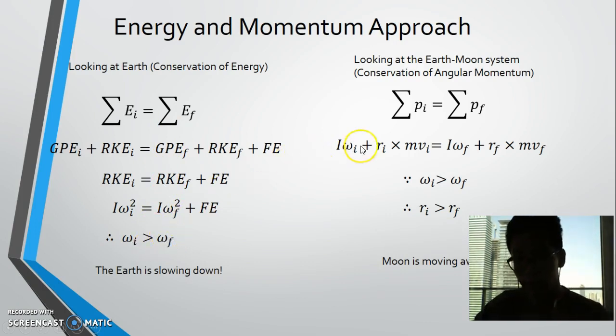And if we look at it from an angular momentum standpoint, we know that angular momentum is the sum of the rotation plus the radius times the linear momentum. And therefore, since the earth's rotation is slowing down, that means that the moon's rotation has to increase, or the radius times the momentum of the moon has to increase.